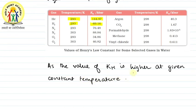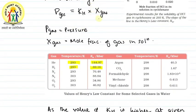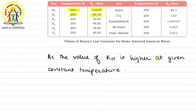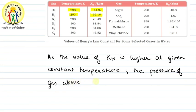Let's study how to interpret Henry's Law from this. If at the same temperature and same mole fraction we compare two gases with different KH values, the gas with the higher KH value will have a higher pressure above the liquid. This means as the value of KH is higher at a given constant temperature, the pressure of gas above the liquid will be higher.